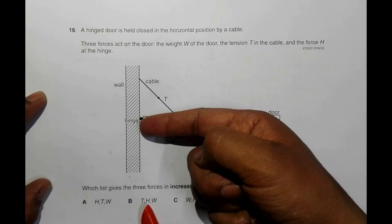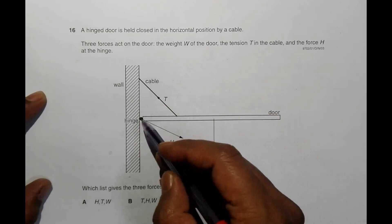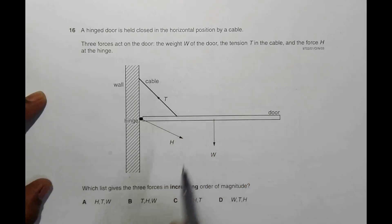We often notice that if the hinge is weak, this door might just slip like this. It just gets off the screws or the nails just get off from the holes and the door might fall like this.